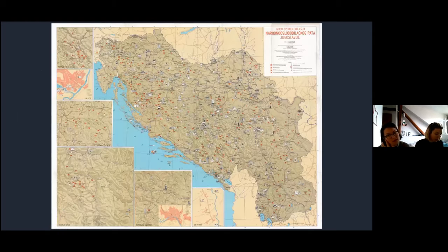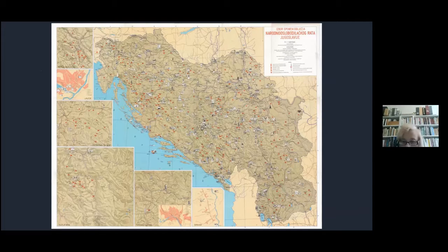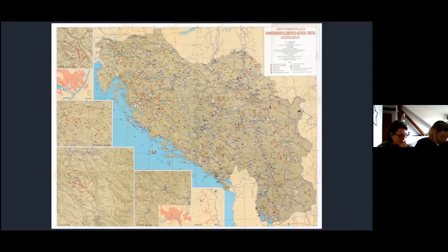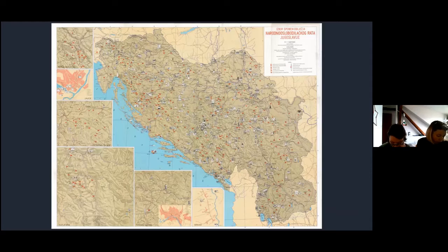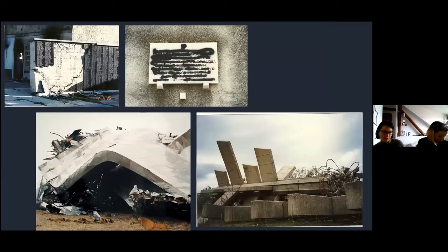To understand what happened and how it happened, it's important to know that from 1945 to 1990, between five and eight thousand monuments and memorials were erected only in Croatia, and approximately sixteen thousand in all of Yugoslavia. According to the monograph on the destruction of anti-fascist monuments in Croatia published by the anti-fascist association in 2001, almost three thousand of these monuments were devastated between 1990 and 2000, 731 of them being sculptures. We conducted a research that resulted in an exhibition in 2012, which pointed out the patterns that made destruction at this scale possible.